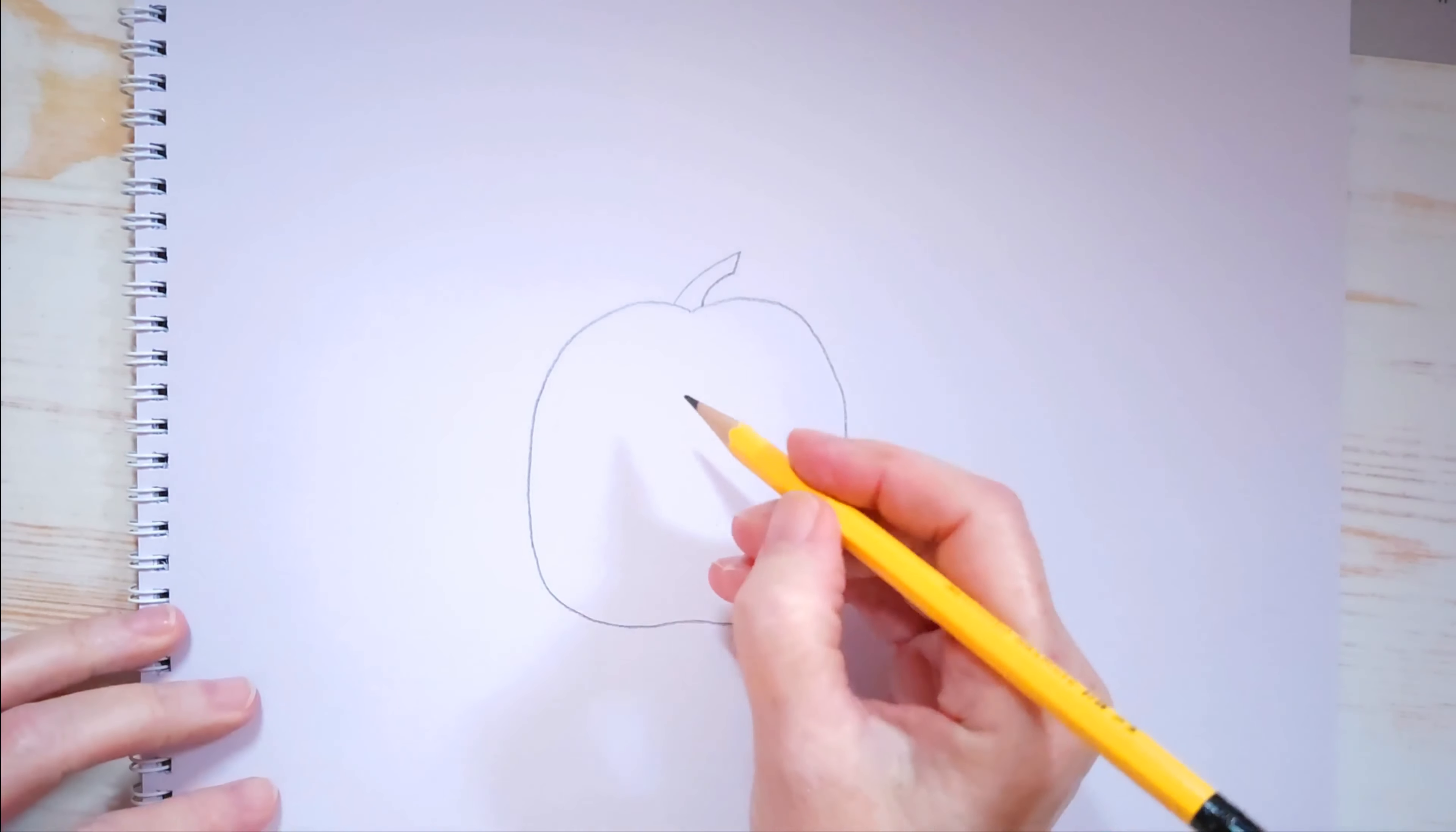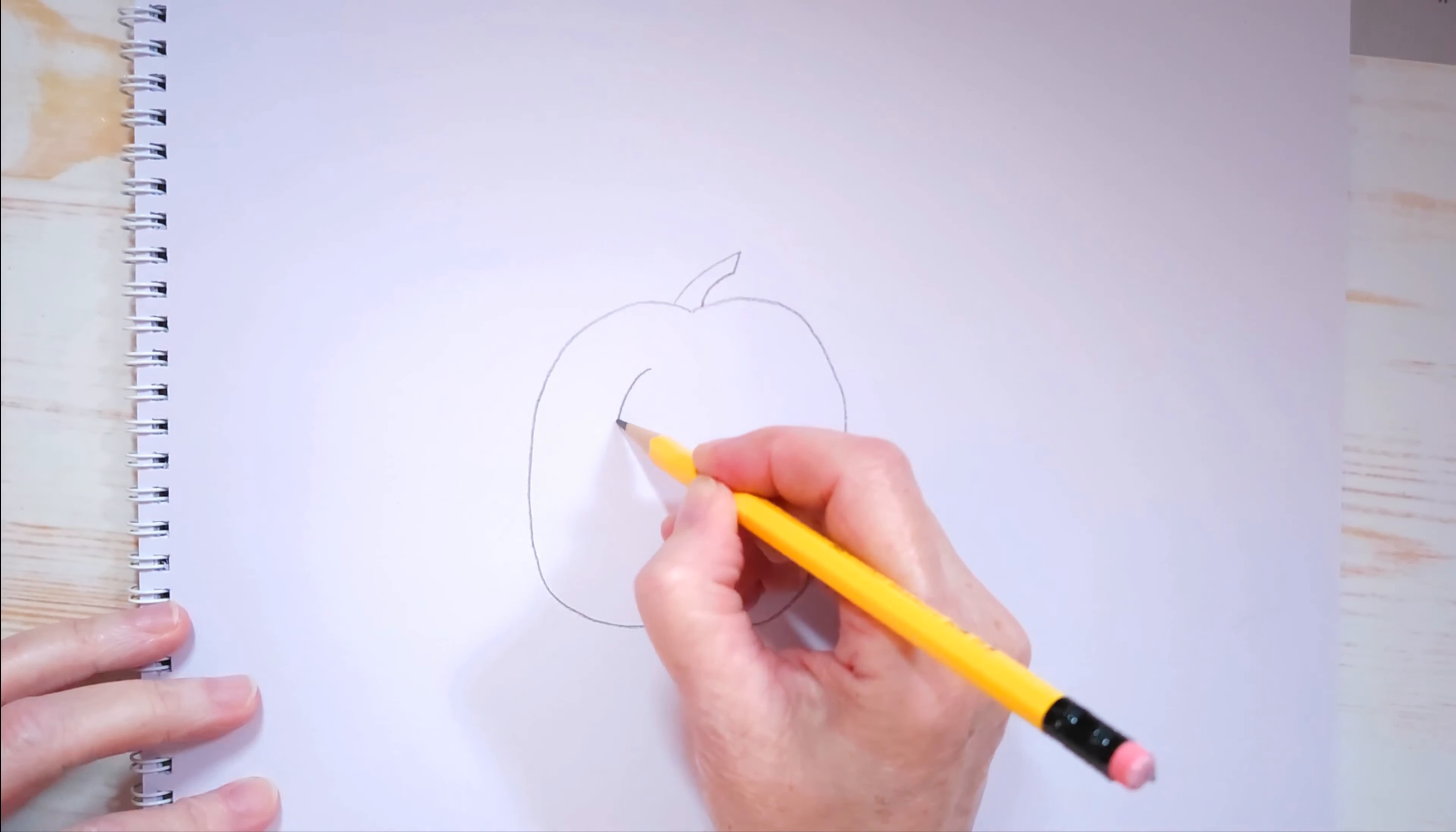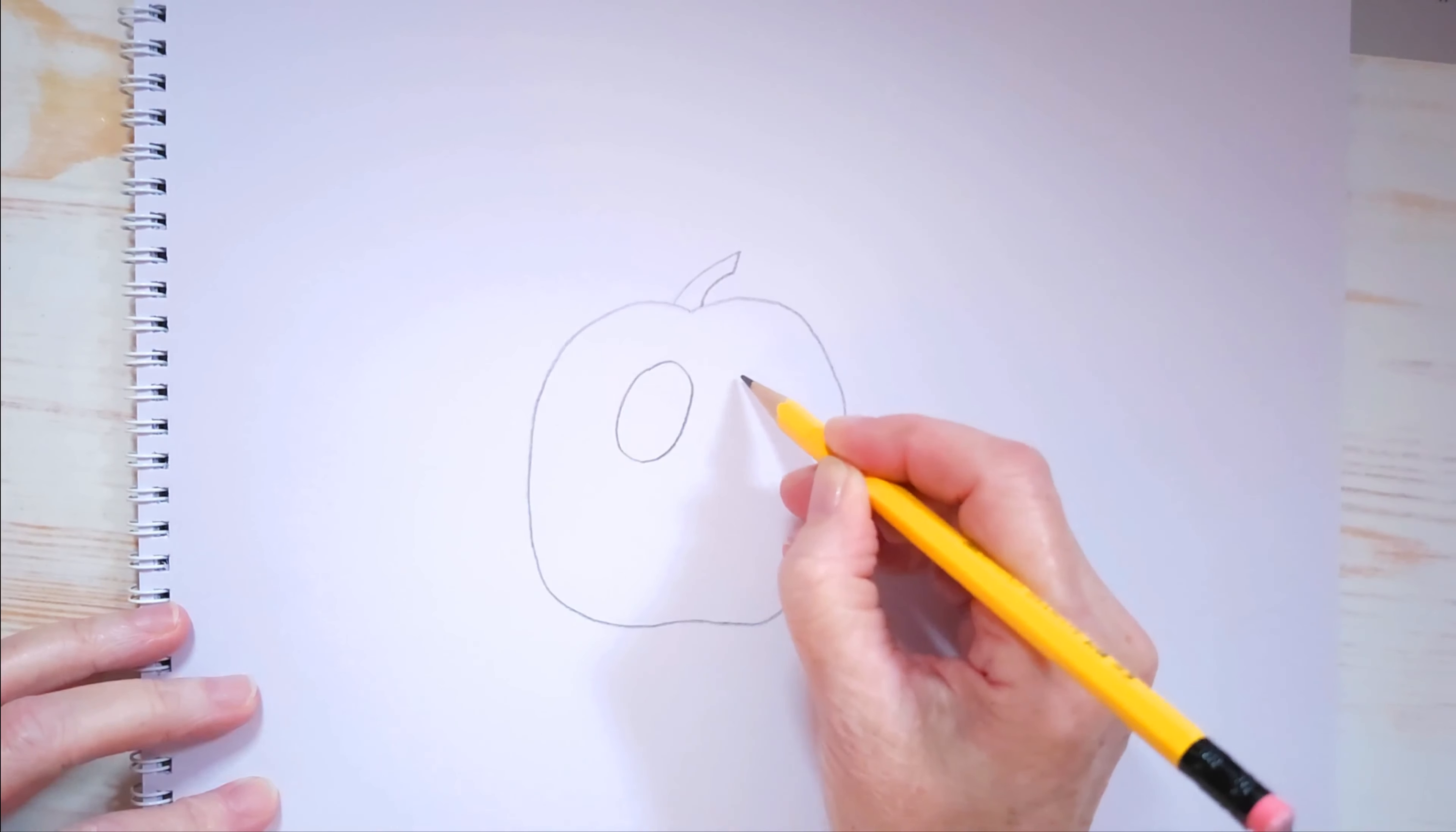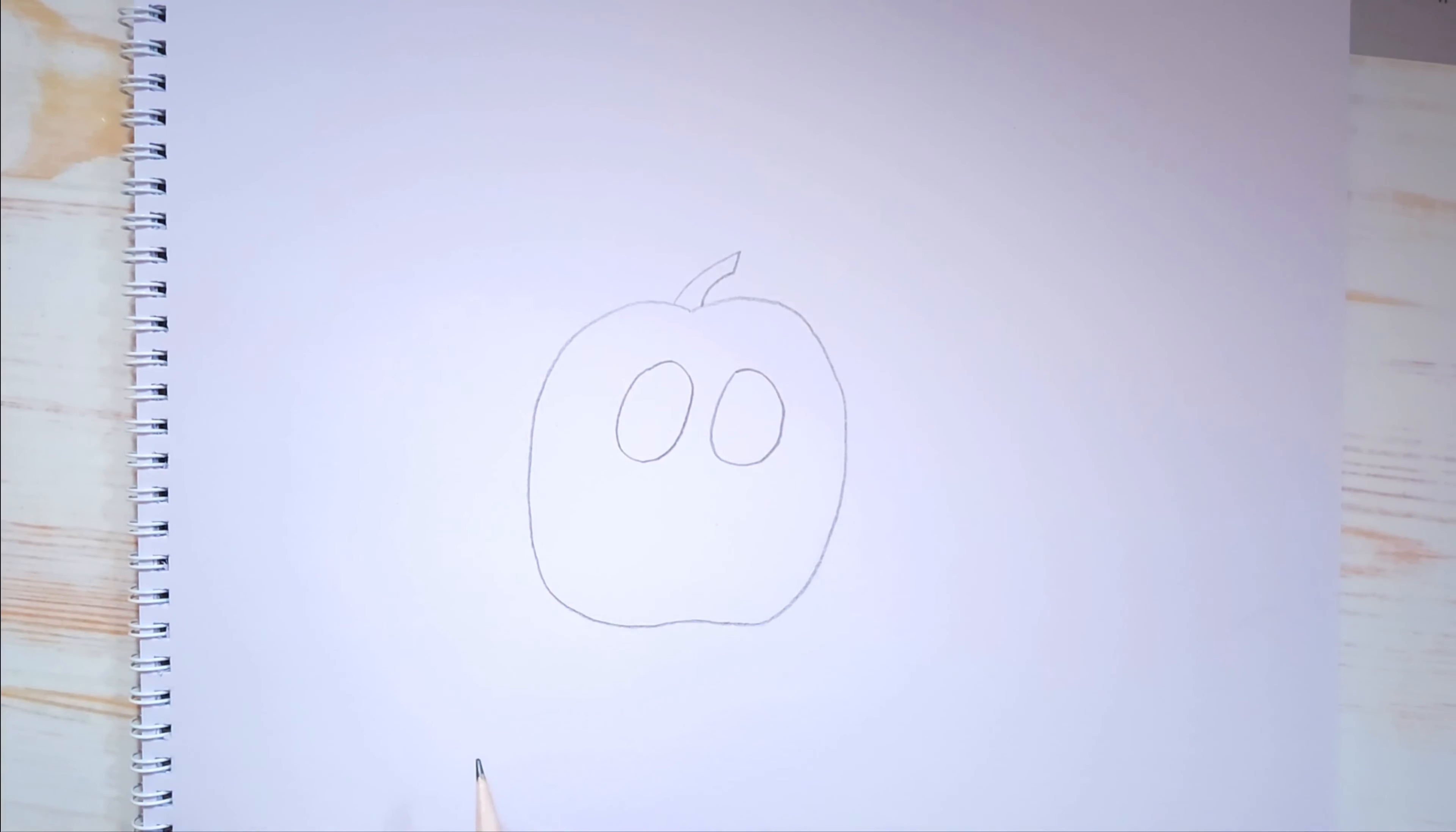And why don't we draw the eyes right away? I want big big big eyes. Alright, big big big eyes, just like that. And we're going to draw, you know what, we'll stop there and we'll draw some details in after. The only thing I want to do is watch what I'm going to do. I'm putting in a little bit of a line on the sides of each of his eyes. And that's all we're going to do for now. We're going to add our color first.